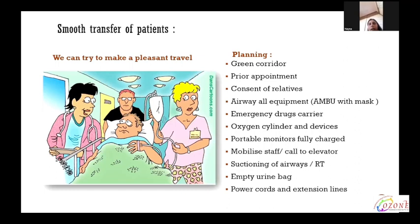Planning is essential. Green corridor, prior appointment, consent of relatives about the risk involved in transport. Airway equipment like an Ambu bag with mask is very essential. Emergency drug carrier, oxygen cylinders and devices, portable monitors which are fully charged. Mobilized staff and calling the elevator is very essential. Prior to shifting, we should suction the airways or Ryle's tube, empty urine bags, and carry power cords and extension lights.